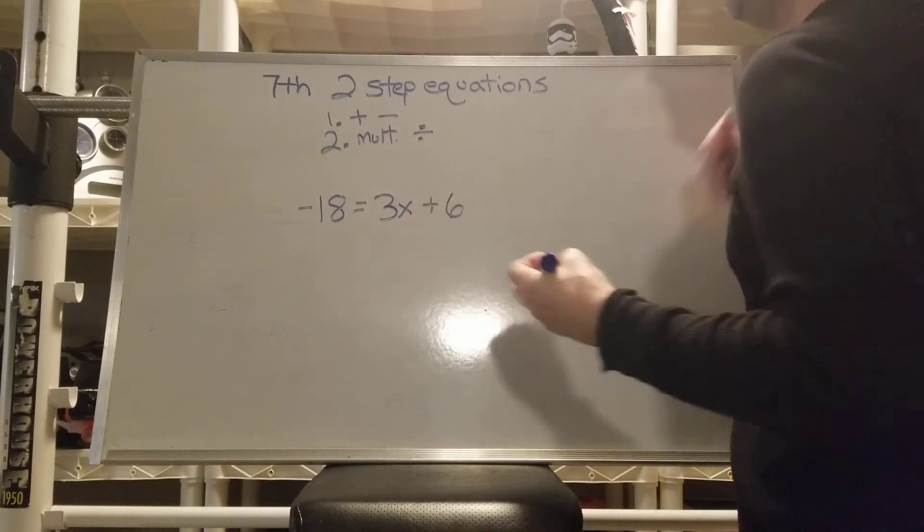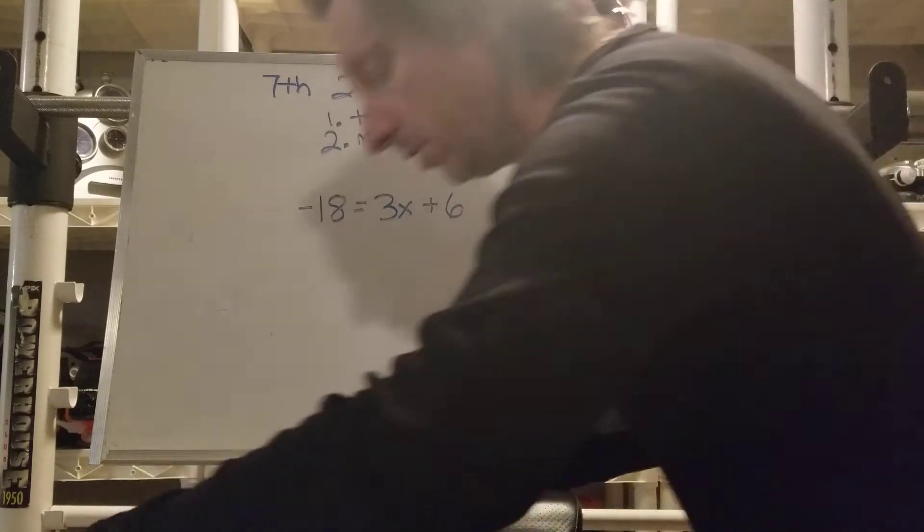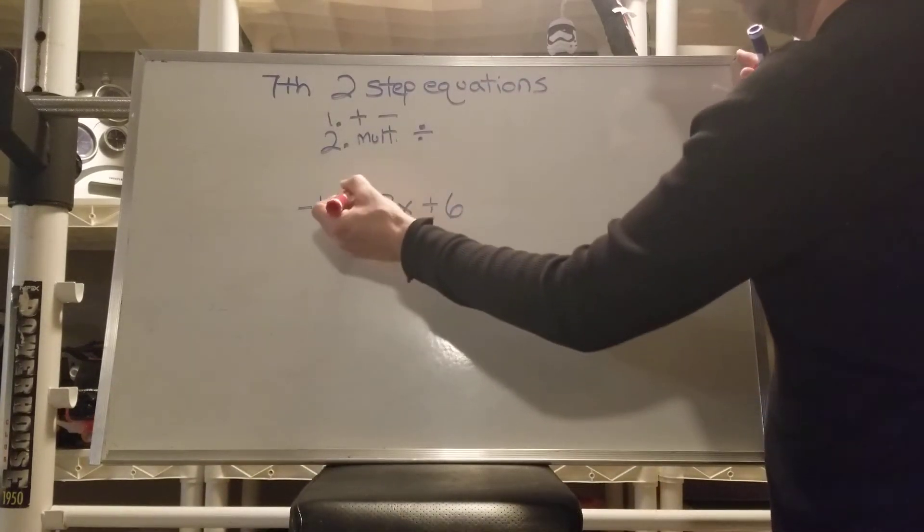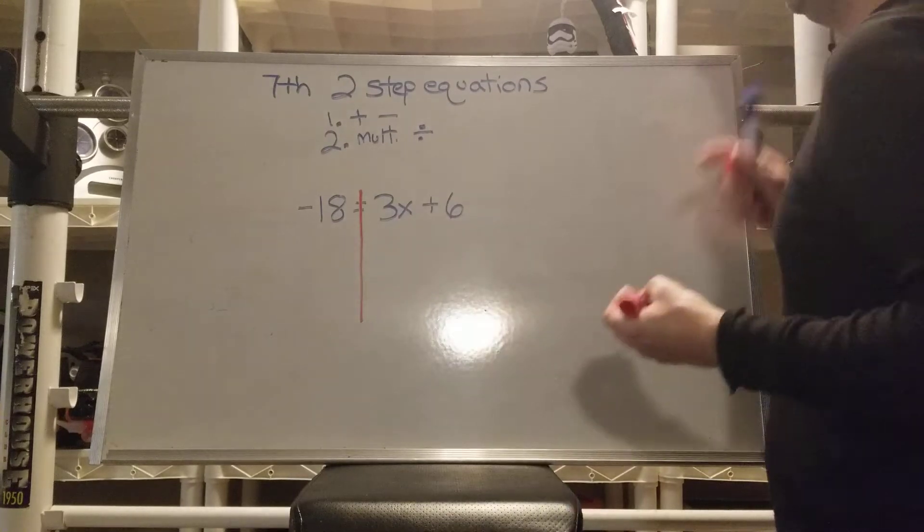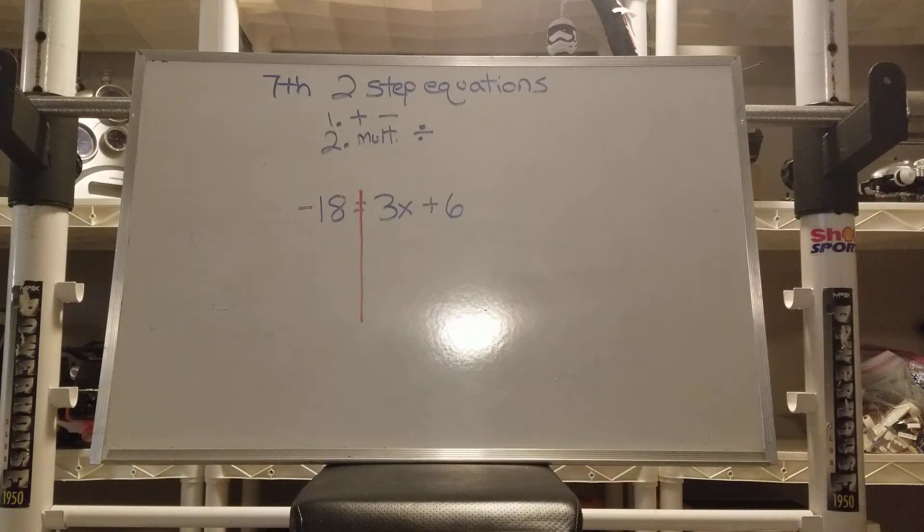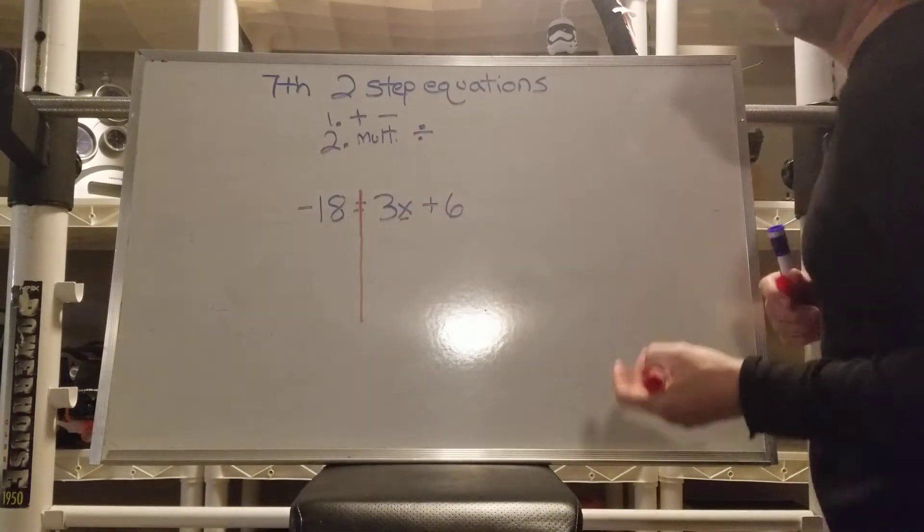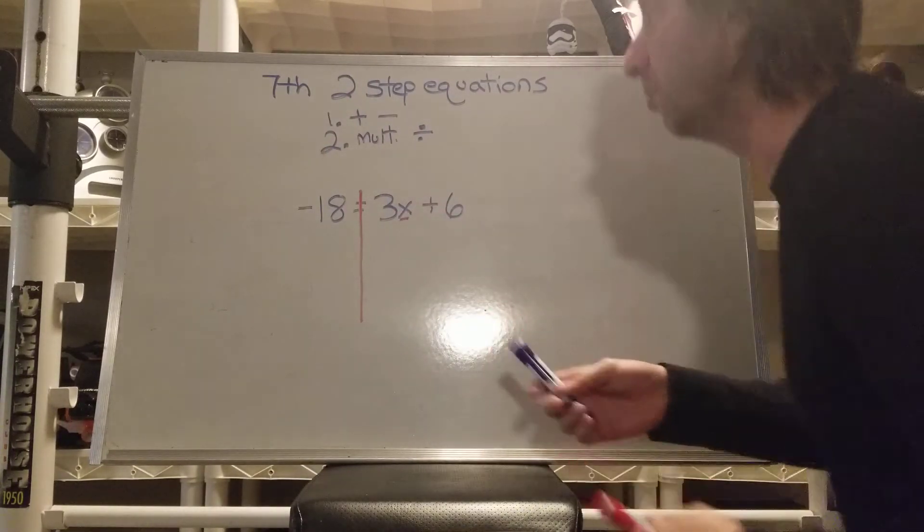We'll make this one a little more complicated. We'll throw in a negative sign and we'll write it backwards. Negative 18 equals 3x plus 6. So an important thing to do with these, you've got to watch, always got to watch your negative signs. So, remember our goal. We're going to get this x all by itself. Then we'll know what x is.